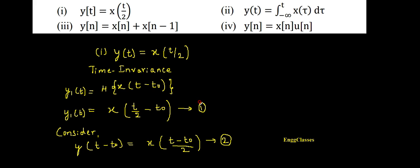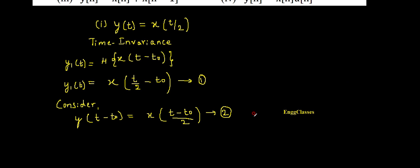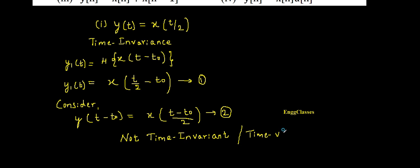The task is to compare equation one with equation two. Equation one results from a shift in the input, and equation two results from an identical shift in the output. If they are equal, the system is time invariant. But they are not the same — x(t/2 - t₀) ≠ x((t - t₀)/2). Therefore, the system represented by y(t) = x(t/2) is not time invariant, or equivalently, it is time variant.